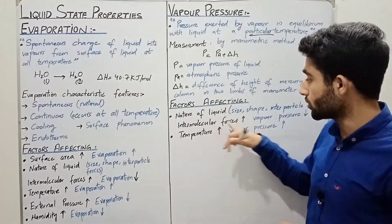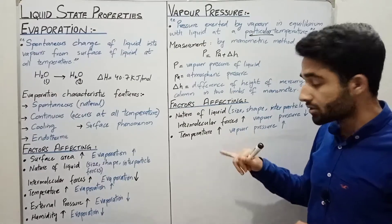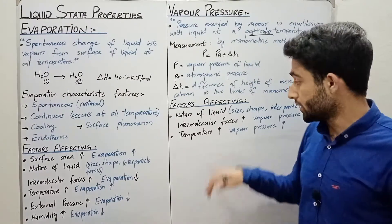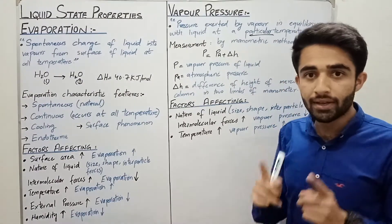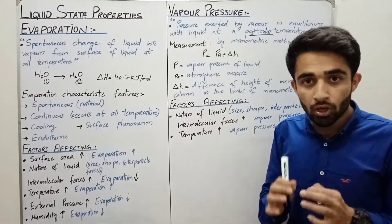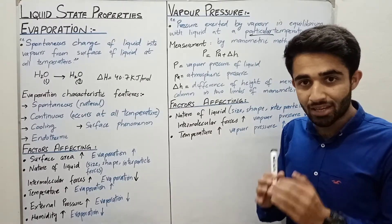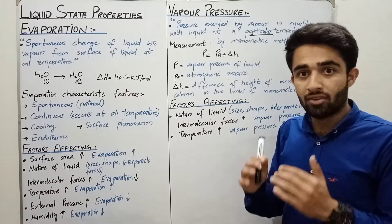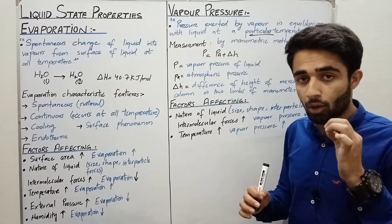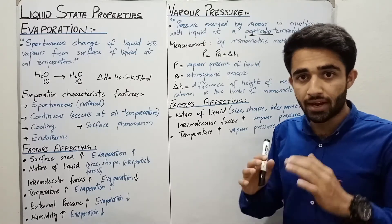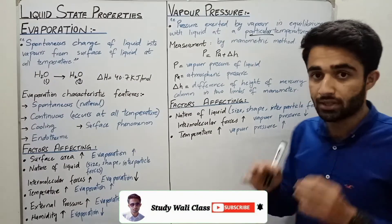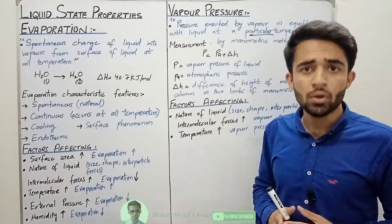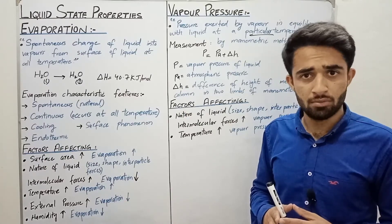The next factor is temperature. If we increase the temperature of the liquid, vapor pressure also increases, because more liquid molecules are able to escape from the surface with the minimum energy required to evaporate. So more molecules are present in the vapor state and vapor pressure increases. These are the factors affecting vapor pressure. Until the next video, take care of yourselves and your family members.